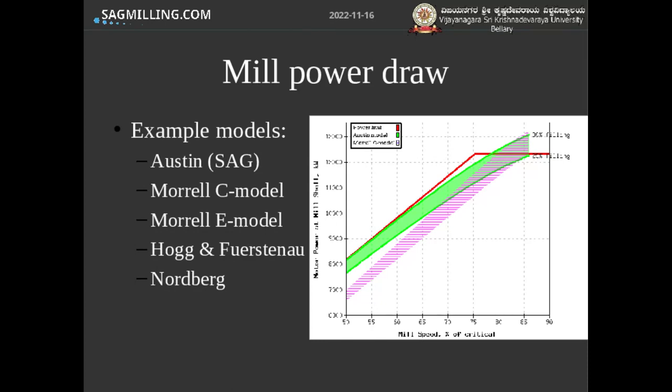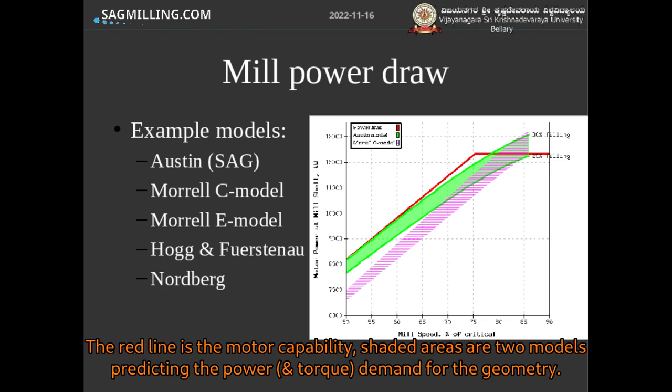In a design sense, you would use power draw models to pick a motor that is bigger than what the model says the mill will draw. In an operating sense, you can use the model to tell you if you can ever reach the power capability of the motor. Since designers should choose a motor bigger than what can actually be drawn, that tells you the maximum power you should be able to draw for your existing ball mill or SAG mill at maximum conditions.